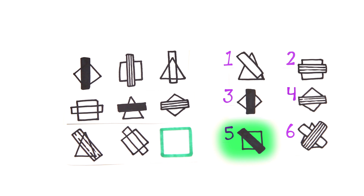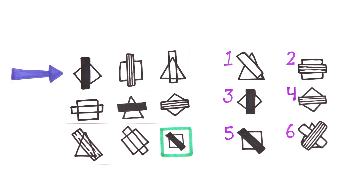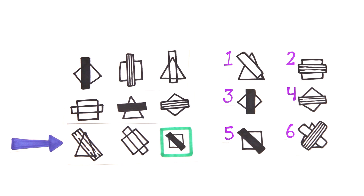If you picked number five, you're correct. Basically, each row has a diamond, a square, and a triangle, as well as a solid bar, a lined bar, and an empty bar. Since this bottom row has a triangle and a diamond, we know the next one's a square, and it also has a lined and an empty bar, so we know we need a solid bar. The direction of the bar is also the same in each line.